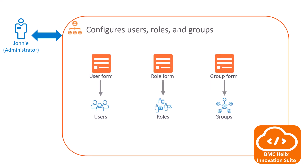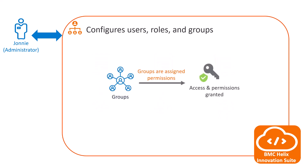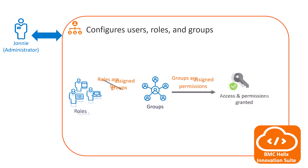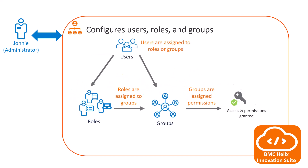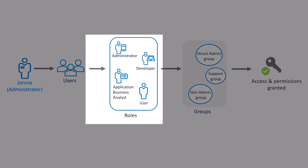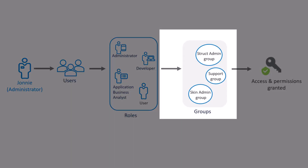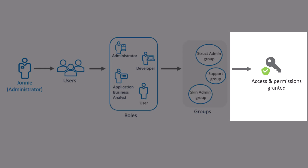Johnny then creates different users, groups, and roles by using the appropriate forms in BMC Helix Innovation Suite. He provides permission to users by assigning them roles and groups to manage their access. For example, Johnny assigns users to administrator, developer, application business analyst, and end-user roles, and maps them to specific groups to define their access.